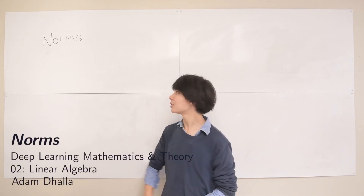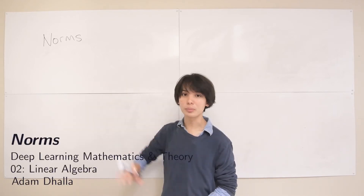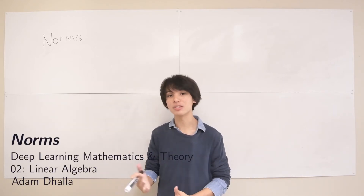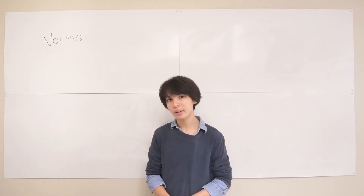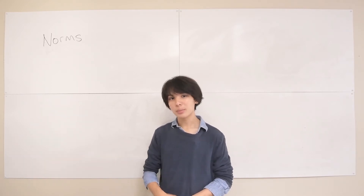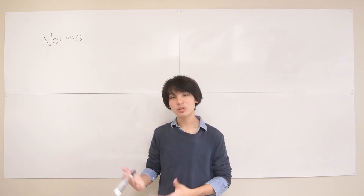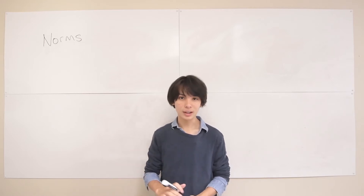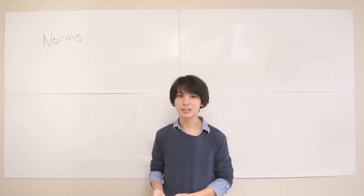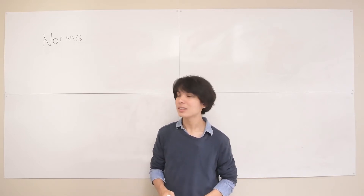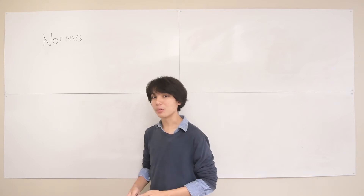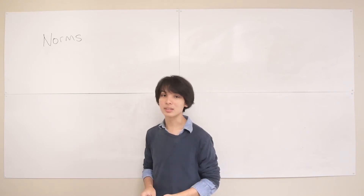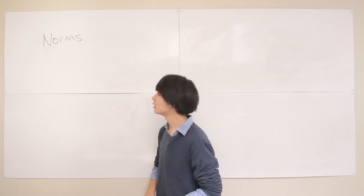In this lecture, I'm going to talk about norms, which is basically how you measure the magnitude of a vector or a matrix. This goes with chapter 2.5 in the Deep Learning Textbook, so I encourage you to read that after watching this lecture. This is a slightly easier topic to cover than something like linear independence and span, so this will be a nice little break.